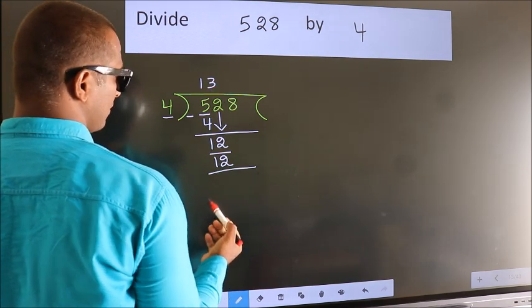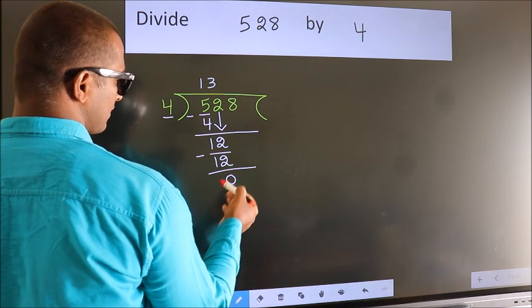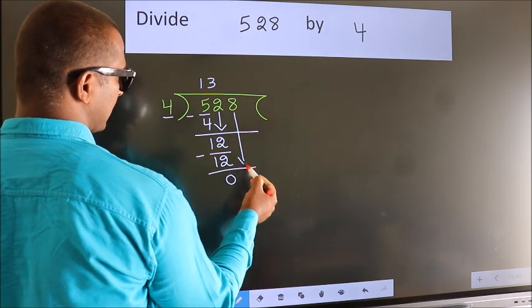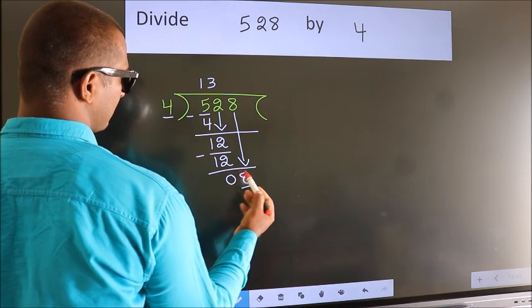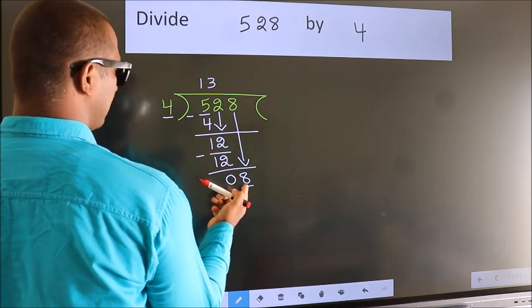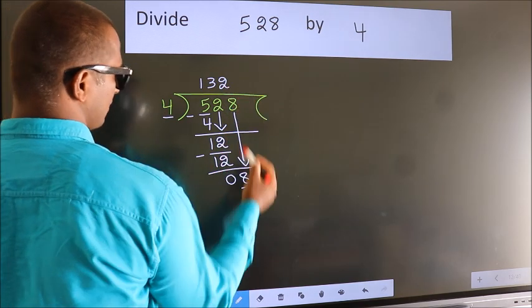Now we subtract. We get 0. After this, bring down the beside number. So 8 down. 8. When do we get 8? In the 4 table: 4 twos, 8.